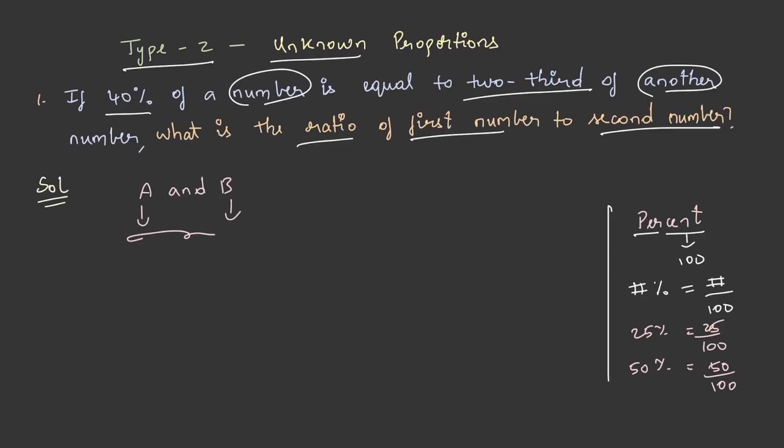this statement is sufficient to build an equation. Therefore, 40 percent of A is equal to 2 by 3 of B, that is 40 by 100 into A is equal to 2 by 3 of B and this becomes 2A by 5 is equal to 2B by 3 and from this A by B becomes 5 by 3, that is A is equal to B is equal to 5 is equal to 3. So this is the ratio of first number to the second number.